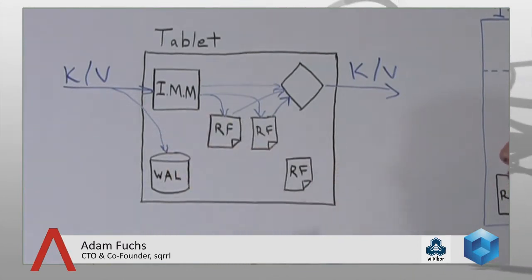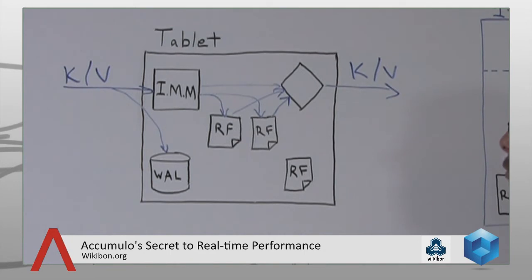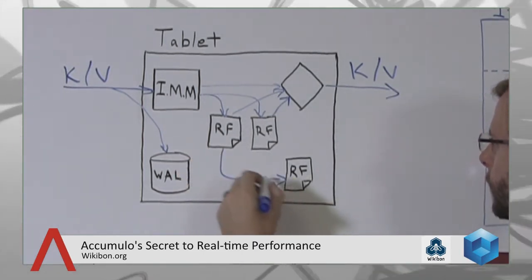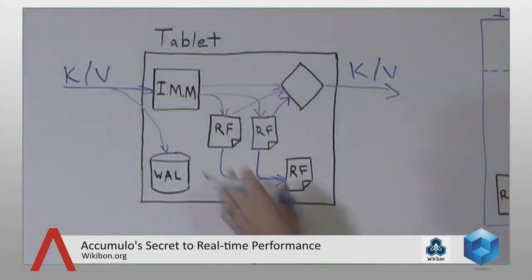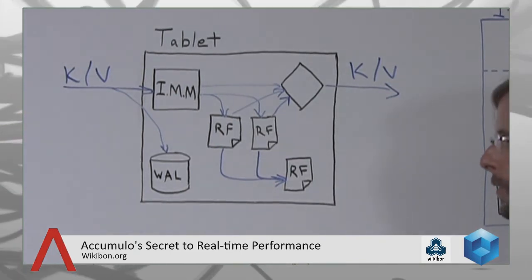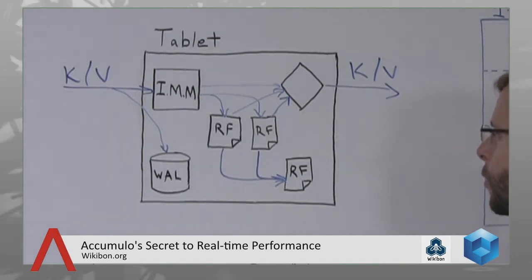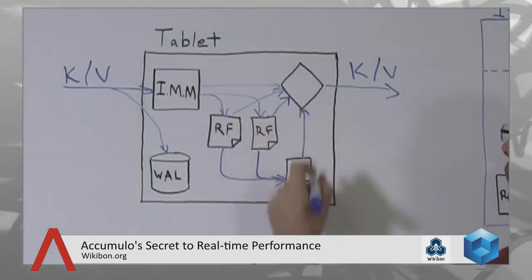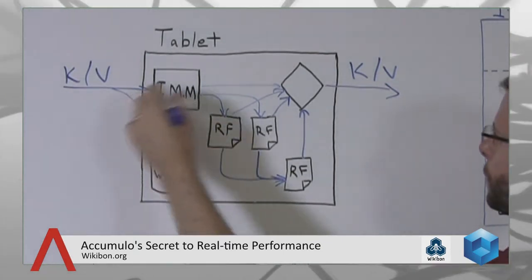Memory will fill up again, so we do another compaction operation, writing to an additional R file. Each of these R files participates in queries, and as we stream data out, we merge data from each of these independent containers to provide a single sorted stream of key-value pairs at the query. The more R files we have, the more seeks we have to do on disk, which impacts query latency. To minimize query latency, we perform an additional background operation known as a major compaction, where we take multiple files and merge them together to create one single globally sorted file. This happens as a background processing operation, with background threads doing the minor and major compactions, and separate threads handling queries and writes.